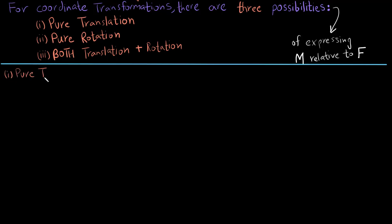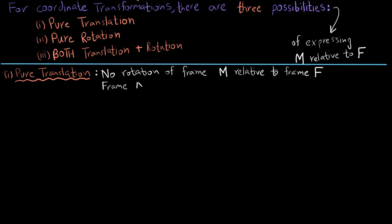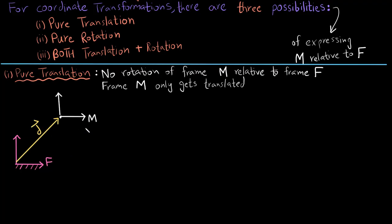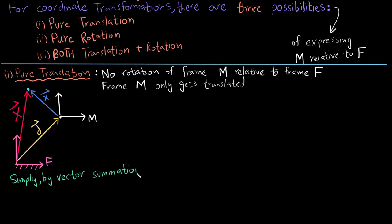Starting with pure translation: in pure translation the moving frame just moves from one point to another with respect to the fixed frame and its orientation does not change. I am drawing the fixed frame in pink and the moving frame in white. You notice that I can simply move from the fixed frame to the moving frame by displacing the fixed frame by a vector d. I have a point defined with respect to the moving frame as small x, and I need to find the coordinates of the same point with respect to the fixed frame, which I have marked as capital X in red. I can simply do the vector summation — big X equals small x plus d. Notice that all of these are vectors.